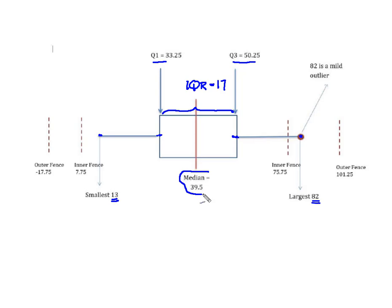And again remember I said that I was going to place the median inside of my box, 39.5, then I placed my inner fences so I got 75.75, 7.75, my outer fence upper outer fence of 101.25, lower outer fence of negative 17.75. And all that's fine and dandy, but what does it tell us about outliers?